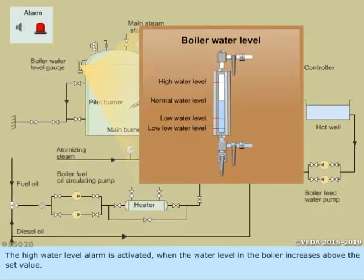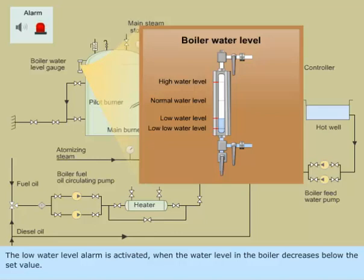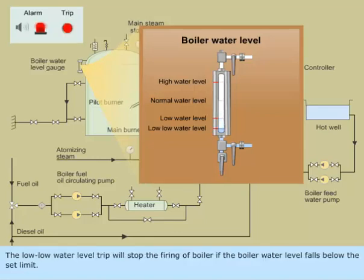The High Level Water Alarm is activated when the water level in the boiler increases above the set value. The Low Water Level Alarm is activated when the water level in the boiler decreases below the set value. The Low Low Water Level Trip will stop the firing of the boiler if the boiler water level falls below the set limit.